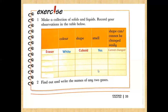Number two is a lunch box. There are different styles of lunch box, but this one has green color — maybe red or white. Its shape is cubic. Does a lunch box have smell? Without food inside, no, it doesn't have smell. Can it change its shape? No, the lunch box cannot change its shape because it is an example of solid.